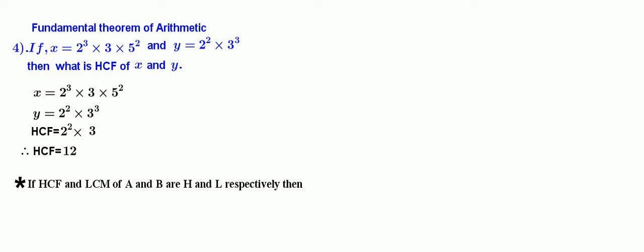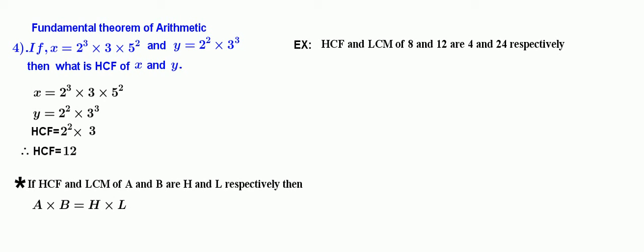Next, if HCF and LCM of a and b are h and l respectively, then a into b equals h into l. For example, the HCF and LCM of 8 and 12 are 4 and 24 respectively. 8 into 12 equals 96, and 4 into 24 also equals 96. Therefore, 8 into 12 equals 4 into 24.